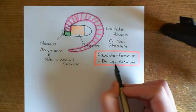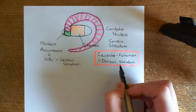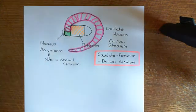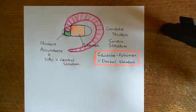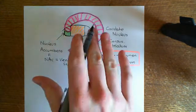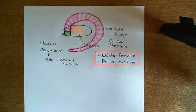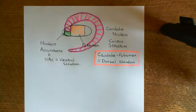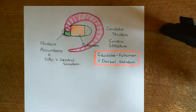The dorsal striatum is part of the basal ganglia. We've now completed all of the portions of the basal ganglia: the dorsal striatum — which is the caudate and the putamen — the internal and external globus palliduses, the substantia nigra pars compacta, the substantia nigra pars reticulata, and the subthalamic nuclei. Together they are the basal ganglia.